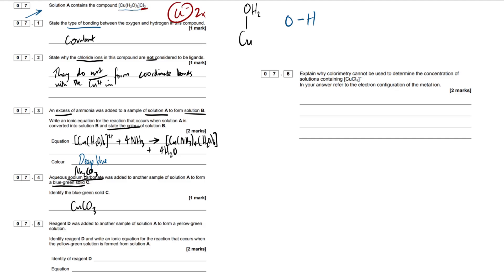Next up then, 7.5. Reagent D, we don't know what it is. We have to identify it. This was added to another sample of solution A to form a yellow-green solution. So we're getting a pattern here. Colors are crucial to the transition metal topic. Go through Anki, go through Quizlet, learn your flashcards for these colors and it'll be so helpful to you and you can get as many marks as possible. So we have to identify reagent D, write an ionic equation for the reaction that occurs when the yellow-green solution is formed from solution A. So yellow-green solution then. How can we form a yellow-green solution from this complex? That would actually be the formation of our CuCl4 2- complex. So I'm going to sort of do this question in reverse. I'm going to write out the equation and then simply identify the reagent afterwards.